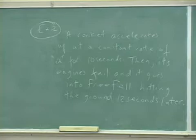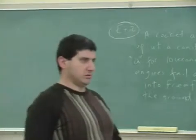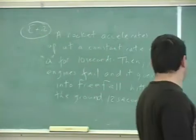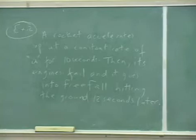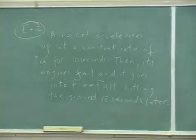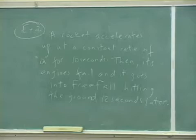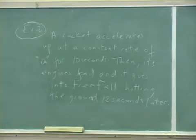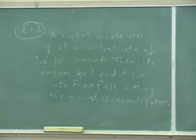A rocket accelerates up at a constant rate of A for 10 seconds. Then its engines fail and it goes into free fall. From that point on, after it goes into free fall, it hits the ground 12 seconds after the engines fail.